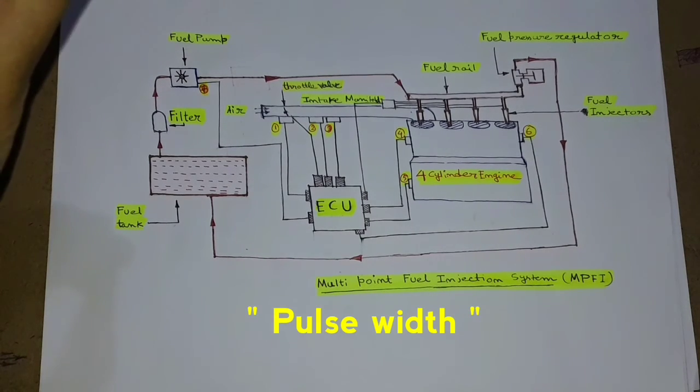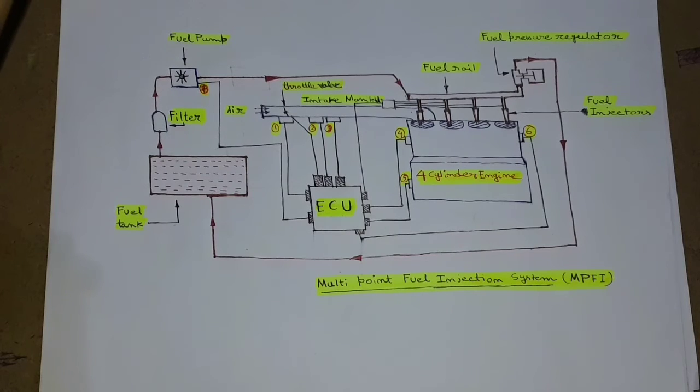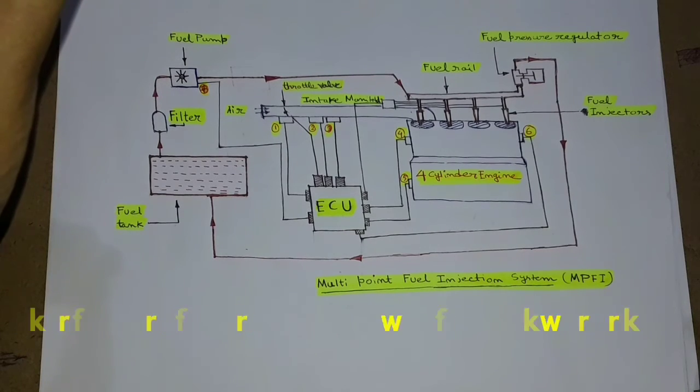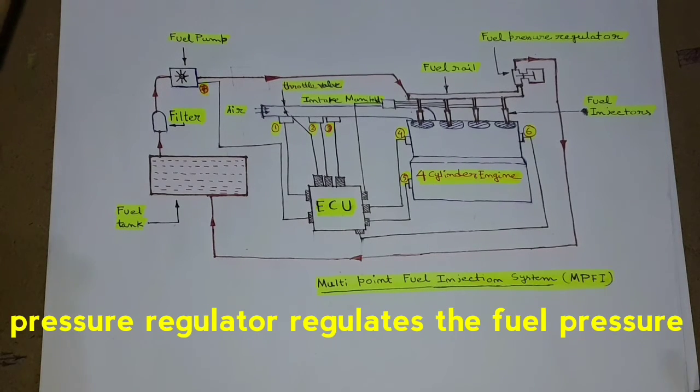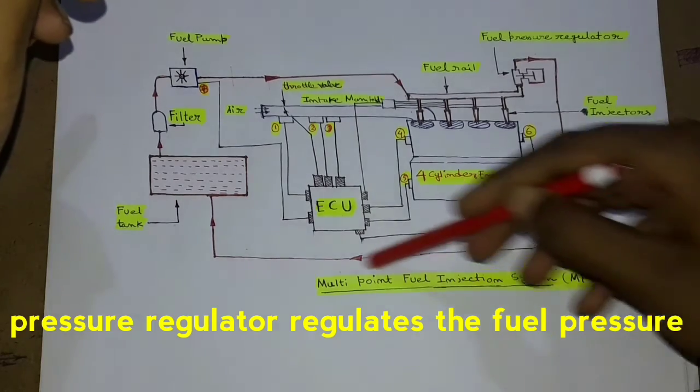This time is known as pulse width. Now there is a fuel pressure regulator here, which opens when there is excess pressure in fuel rail and sends the extra fuel back to the fuel tank.